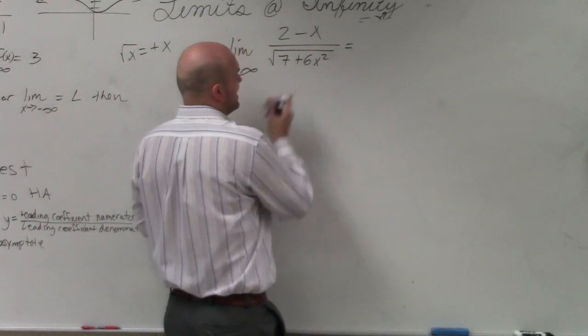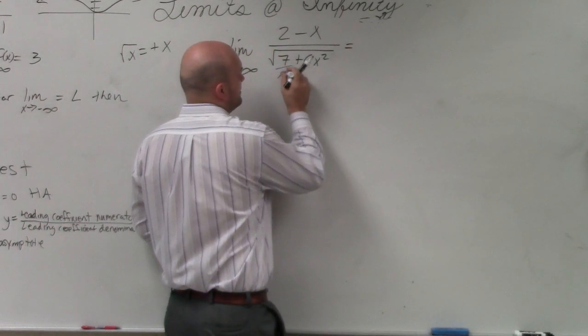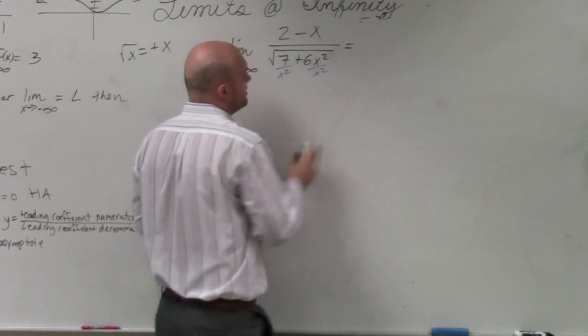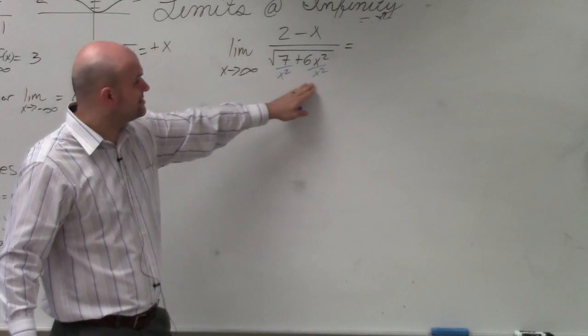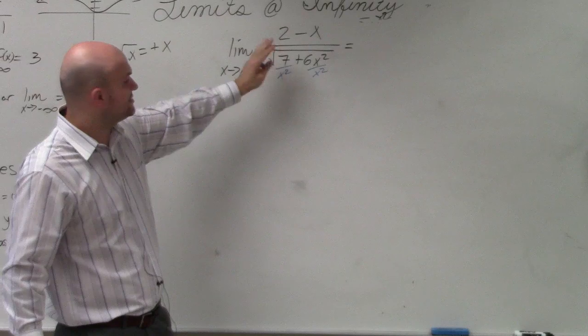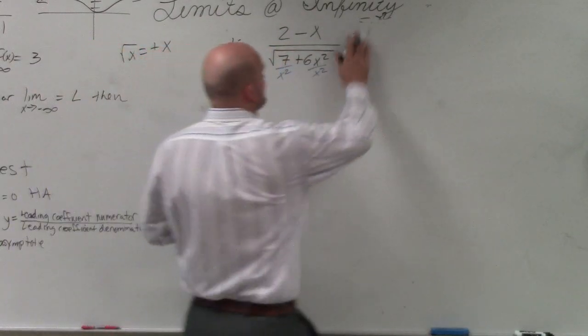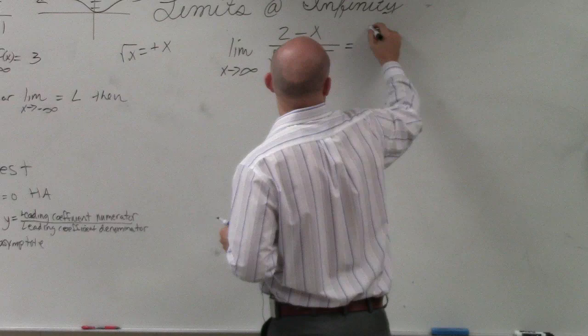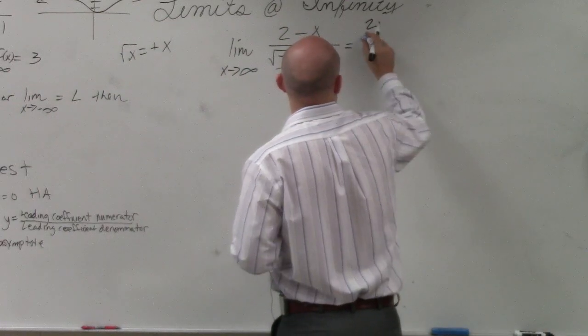So I'm going to divide both of these numbers by x squared and x squared. But remember, those x squareds are under that square root. So if I'm going to divide them for these two numbers, I've got to make sure that I include that under the square root.